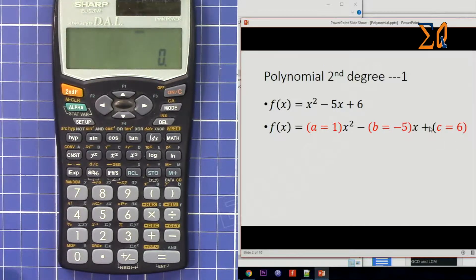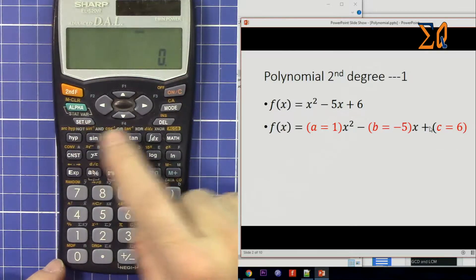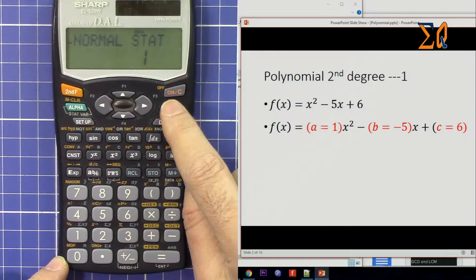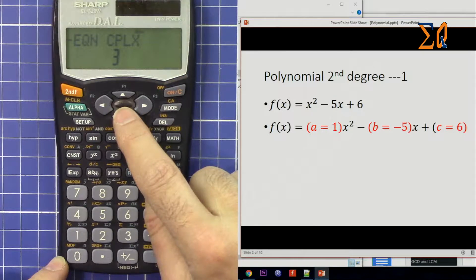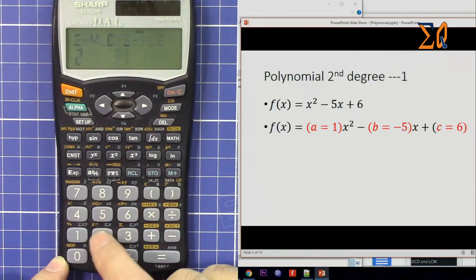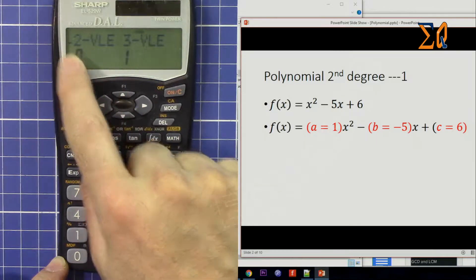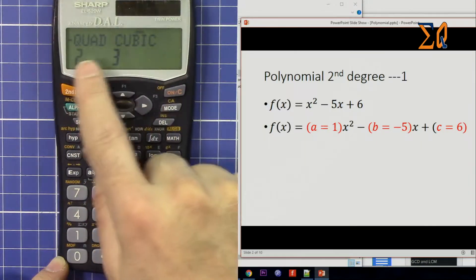But to do that we have to go to mode, go down with the arrow, and then press 2 for equation. Then this arrow shows that we can go down to quadratic and then cubic. For quadratic press 2.